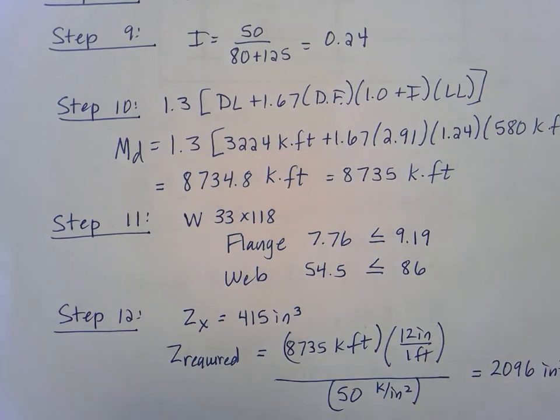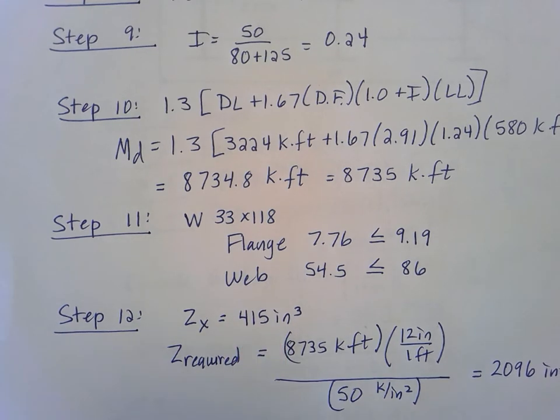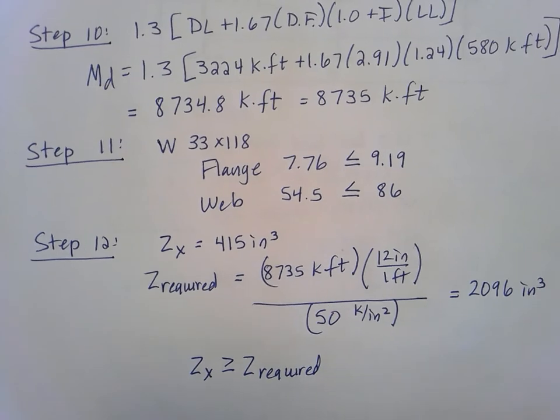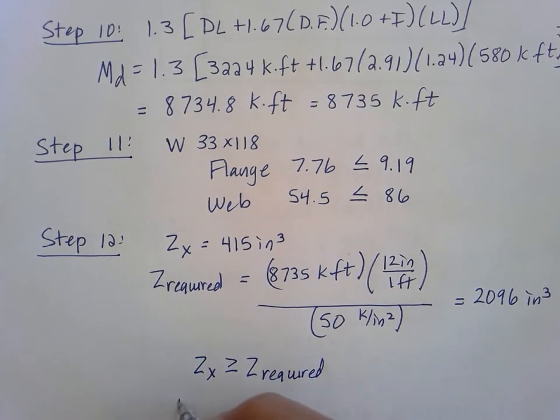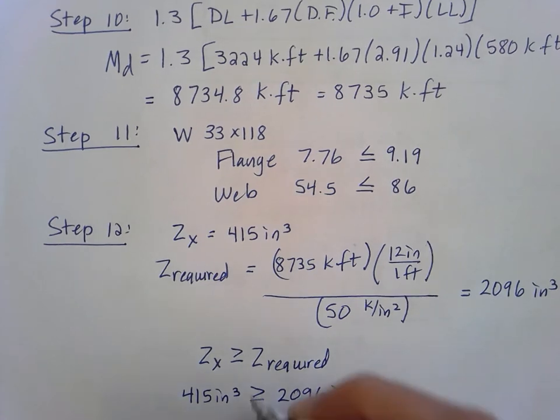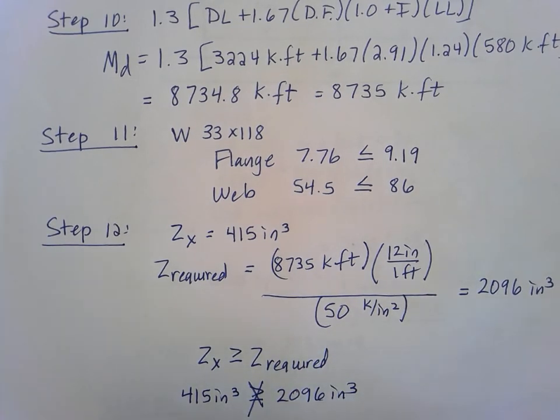Now we want to check that number versus the Z sub X that we found on our chart. Check out this Z sub X. Remember, we want our Z sub X to be greater than or equal to our Z required for the girder to work. So is that true? No, look at this. We have 415 inches cubed. That is not greater than or equal to 2096 inches cubed. In fact, that is much, much less. So that is not going to work.